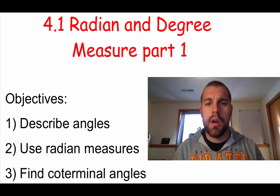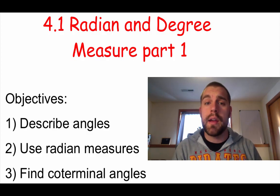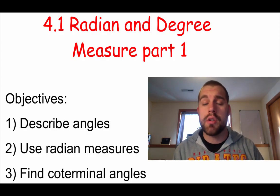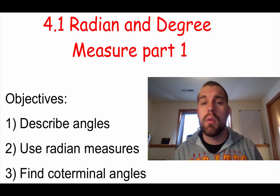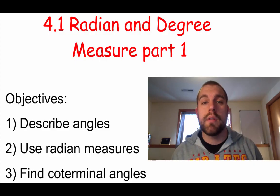Hey guys, Mr. Bakkerud here. This is part one of lesson 4.1. We're going to be taking a look at radian and degree measures — three objectives for this video: we're going to describe angles, we're going to use radian measures, and we're going to find coterminal angles.